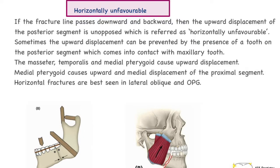In a horizontally unfavorable fracture, the fracture line passes downwards and backwards — the opposite direction to the favorable fracture. Naturally, the upward displacement of the posterior segment would be unopposed. In the previous case the body of the mandible provided physical obstruction; however, in this case there is no such physical obstruction. In some cases the upward displacement may be prevented when a tooth contacts its opposing tooth.